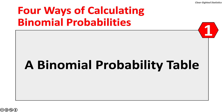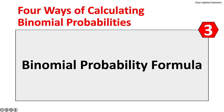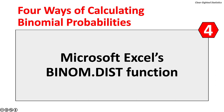There are four ways of calculating binomial probabilities. The first is a binomial probability table. The second method is Pascal's triangle. The third method is the binomial probability formula. And the fourth method is using computer software. Microsoft Excel has a function called BINOM.DIST that will calculate binomial probabilities.